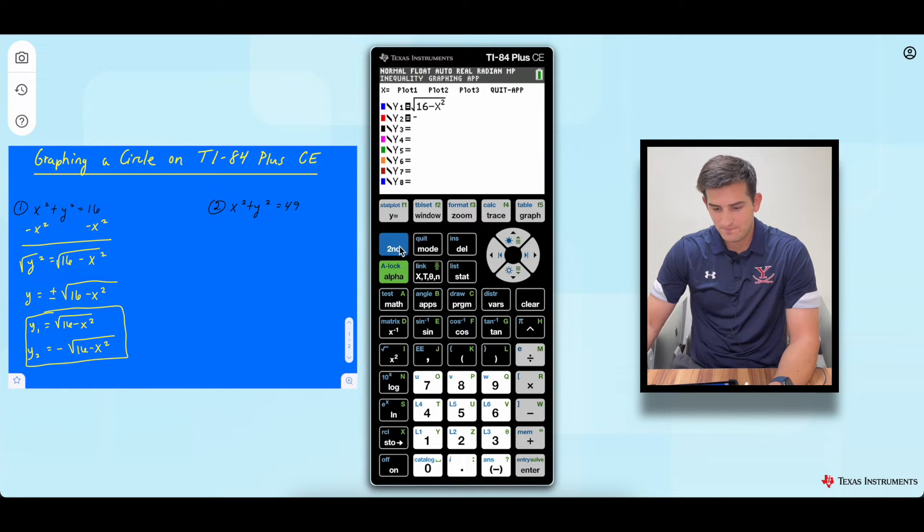So negative down here and second square root. So 16. Now we do minus and x squared, not x2, x squared. So if you do that, just go over here, delete, and then you can come back and hit the square.